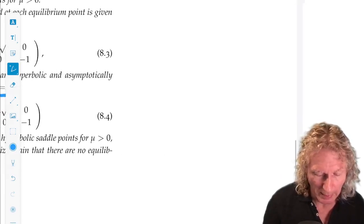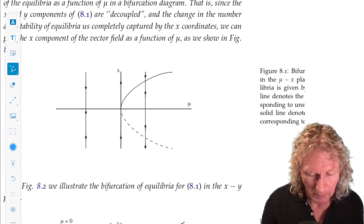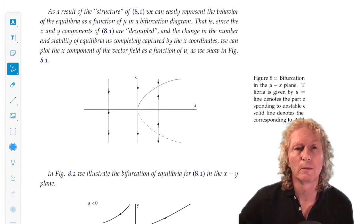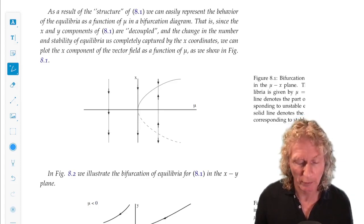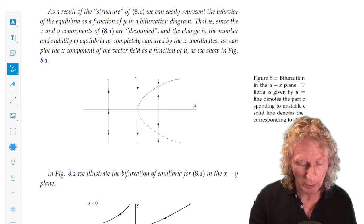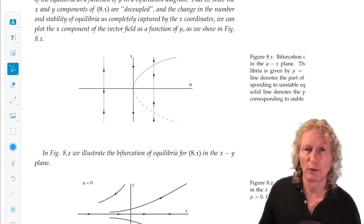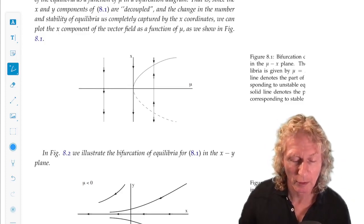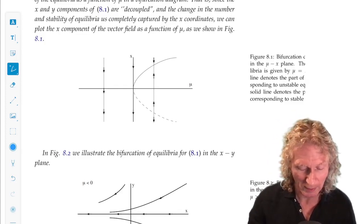Now, we can get an idea of what happens for all of the equilibrium points as a function of the parameter mu by plotting a bifurcation diagram. This example is chosen so that you can actually do this and understand it.